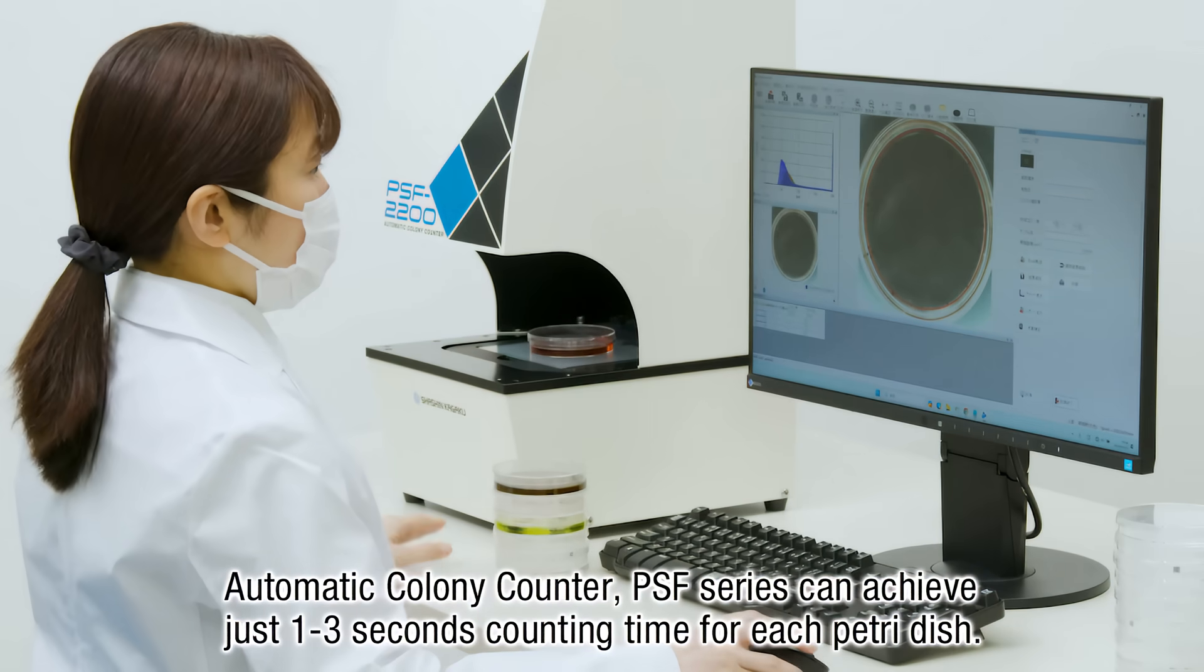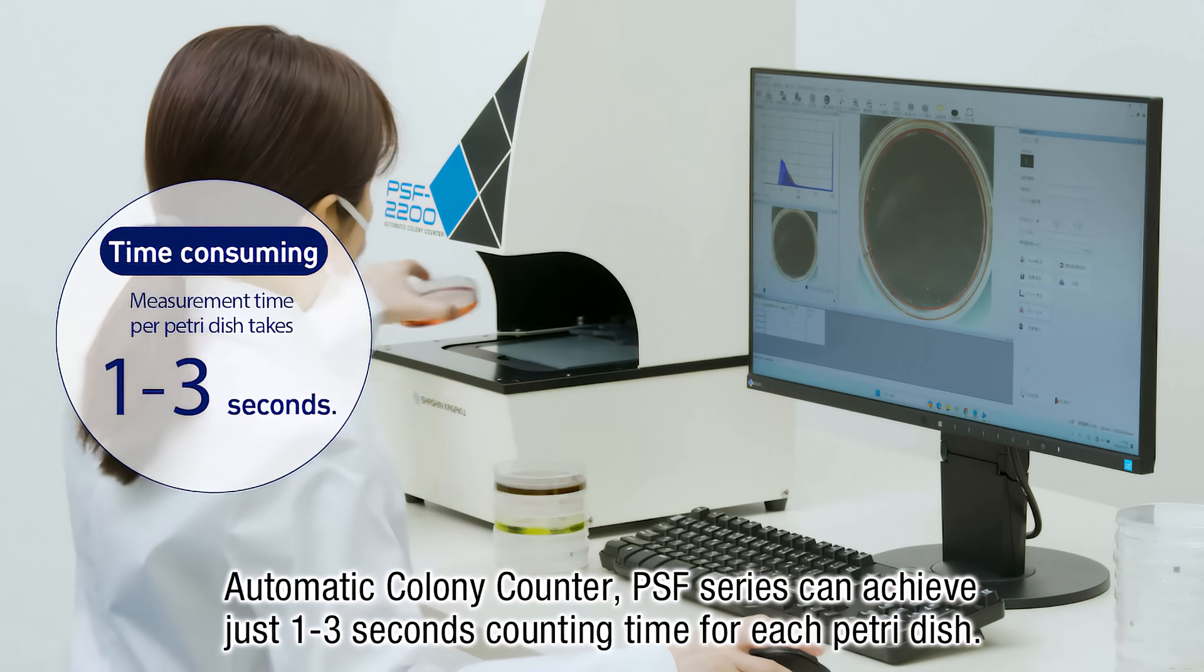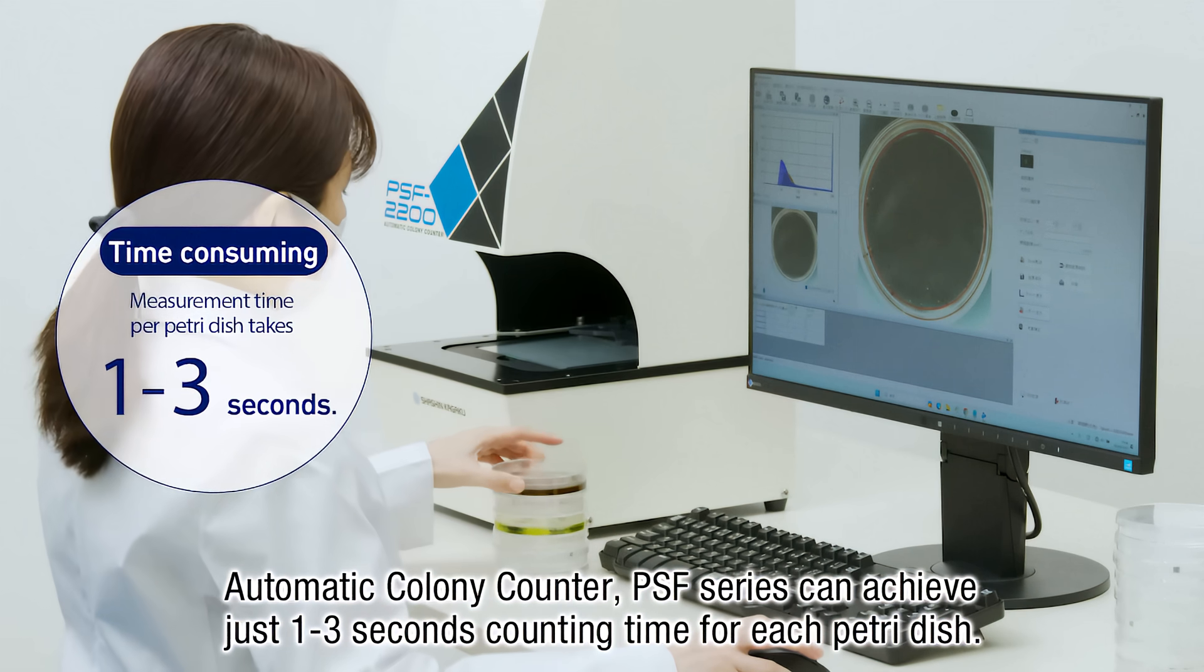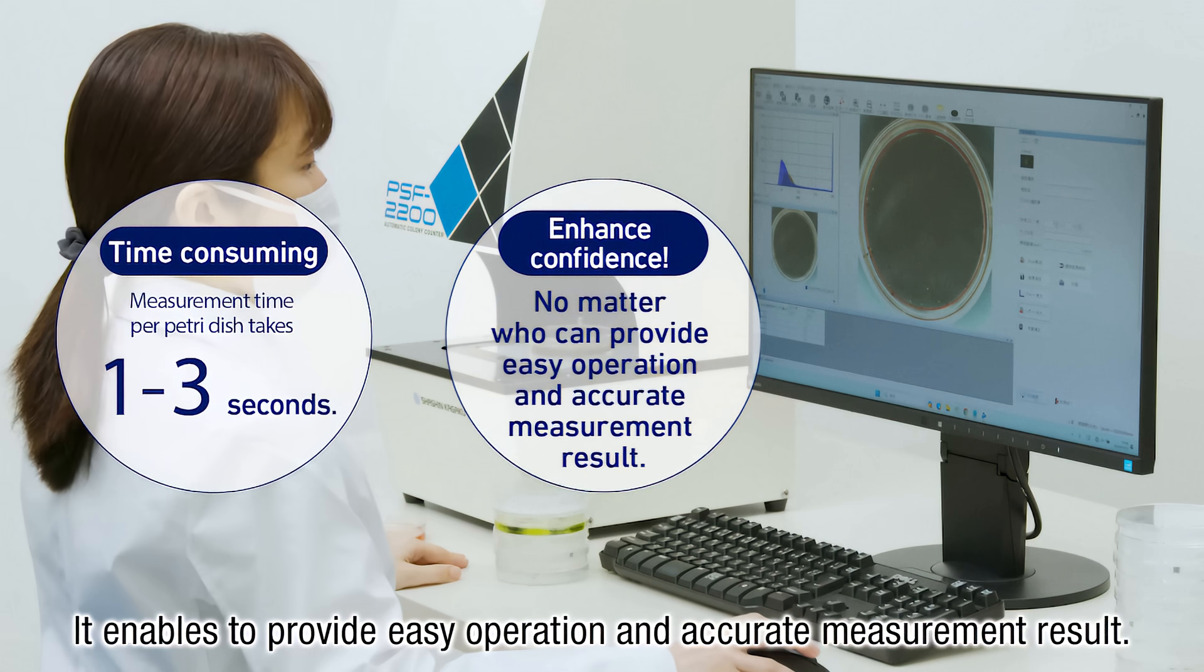Automatic Colony Counter PSF Series can achieve just one to three seconds counting time for each petri dish. It enables easy operation and accurate measurement results.